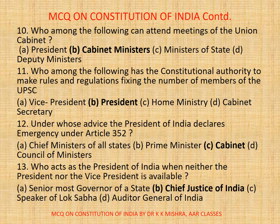Question number 11. Who among the following has the constitutional authority to make rules and regulations fixing the number of members of the UPSC? a) Vice President, b) President, c) Home Ministry, d) Cabinet Secretary. Correct option is b) President.